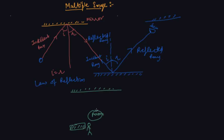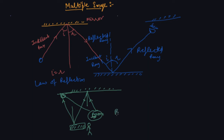Let me show how it works. The person is sitting here facing the mirror. The barber is standing behind him. After the haircut, the barber holds a mirror here — this is also a mirror. The person's image is reflected; the light acts as an incident ray, then reflects off the second mirror and back. The person, if they look here, will be able to see the back of their head.